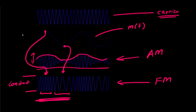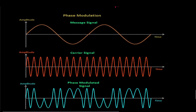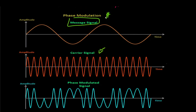Regarding phase modulation: again we have the message signal and the carrier signal. In the phase modulated signal, whenever we have the peak amplitude we would have a phase shift of 180 degrees, and similarly at the negative peak again we have a phase shift of 180 degrees. More details about AM and FM — their calculations and visualization — are given in the following videos.